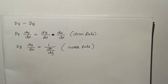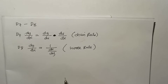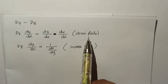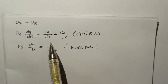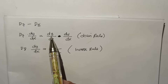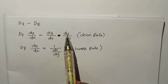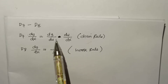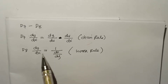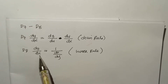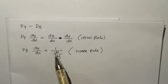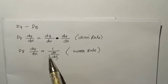We are back. I'll be teaching you all about D7 and D8 — derivative 7 to derivative 8 — which is all about chain rule and inverse rule. In D7, dy/dx is equal to the derivative of y with respect to u times the derivative of u with respect to x. In D8, dy/dx is equal to 1 over dx/dy — just take the inverse of the answer. That is the inverse rule.